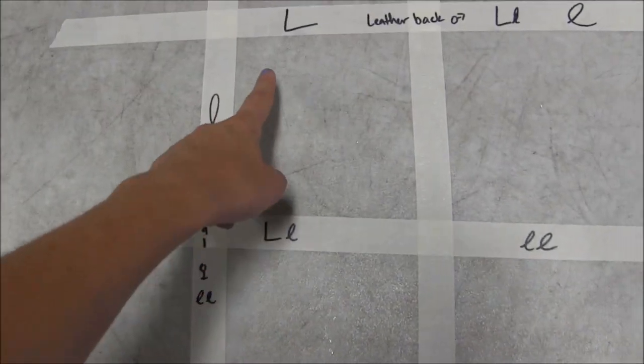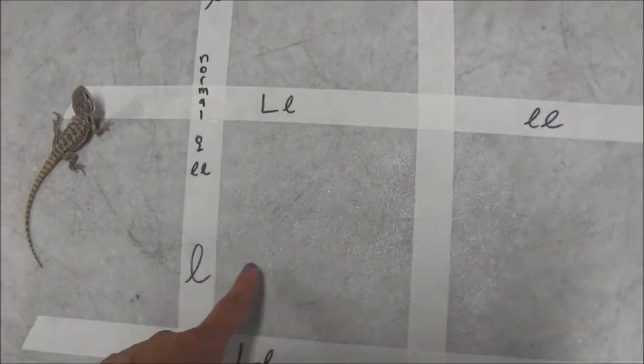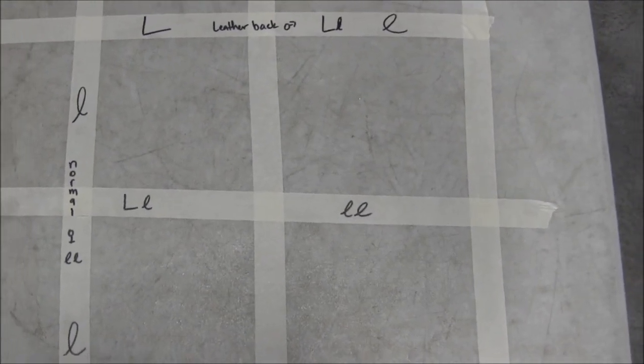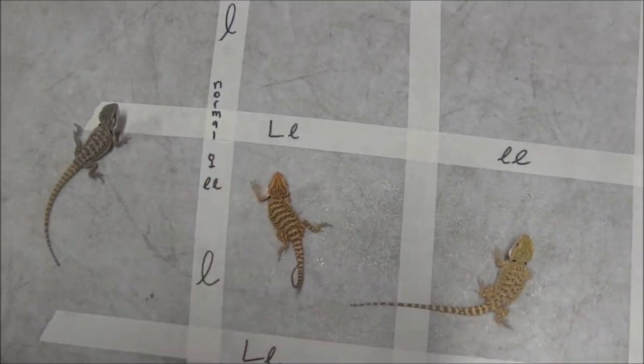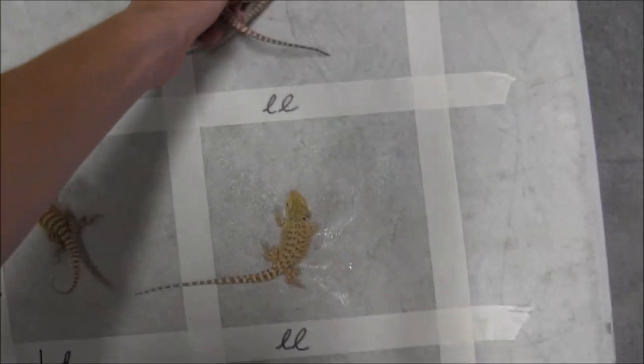And what ends up happening is you bring this down, so the lowercase, or the capital L, comes down here and here, lowercase l goes across here and here, and what ends up happening is you get a square, and for every single egg that's laid, you have a 50-50 chance of having leatherbacks and normals.